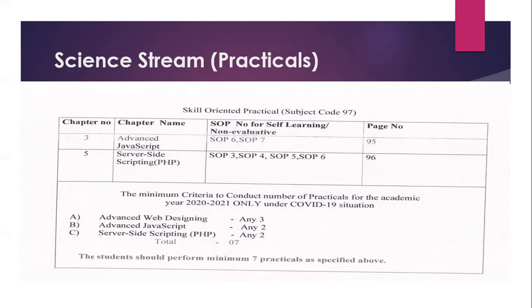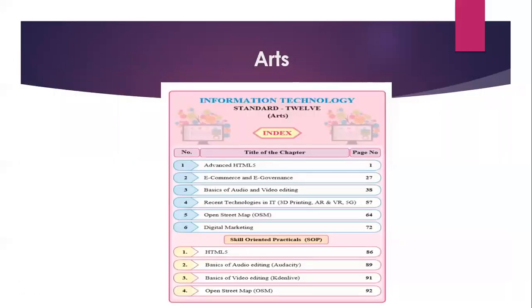The minimum criteria to conduct practicals for this academic year — due to COVID-19 — is as follows: from 12 practicals, we will follow seven practicals. Advanced Web Designing will have three practicals, Advanced JavaScript will have any two practicals, and PHP or Server-Side Scripting will have any two practicals. Three plus four equals seven — seven practicals needed for science stream. Now let's move ahead and check for other streams.